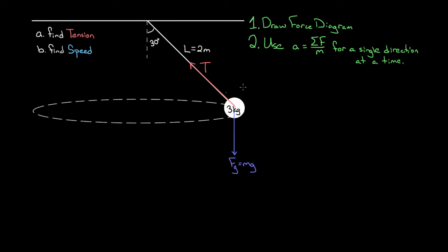I'm going to analyze forces in the vertical direction. The acceleration in the y direction equals the net force in the y direction divided by the mass. What is the acceleration in the vertical direction? It's not negative 9.8 — that's only if the ball were free falling. This ball isn't even changing its vertical height; it's remaining at constant height, so there's no vertical velocity and no vertical acceleration. We put a zero on the left-hand side — zeros make calculations easier.